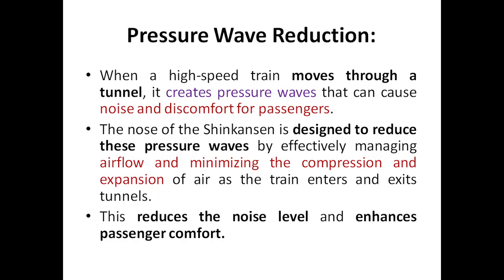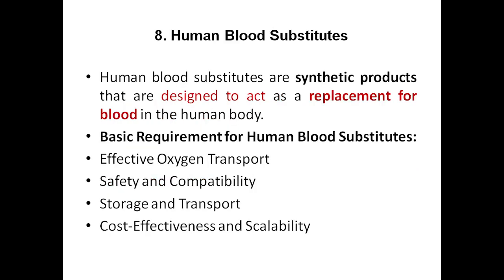The nose of the bullet train is designed to reduce these pressure waves by effectively managing airflow. The design ensures that compression and expansion of air are minimized as the train enters and exits a tunnel respectively — compression on entry, expansion on exit — so that pressure waves are effectively managed. This reduces noise levels and enhances passenger comfort. That is it for today. Next class we are having human blood substitute, which we will discuss in the next class.